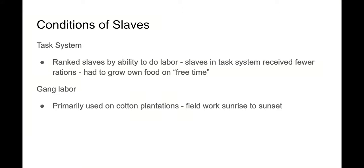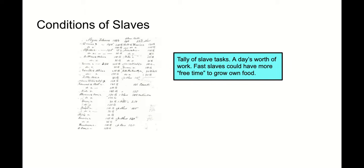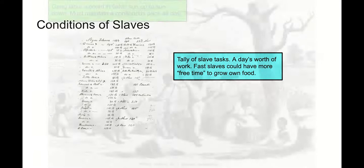What was life like for enslaved people during this time? There were sort of two systems of labor. In the task system, slaves were ranked based on their ability to complete tasks, and if you did your tasks well and quickly, you would get more rations or could grow your own food on your free time — freeing you up to take care of your own family. But plantations primarily used gang labor, where you were forced to work from sunrise to sunset, harvesting as much cotton as humanly possible. Fast slaves would have more free time, but gang labor had to be continuous.